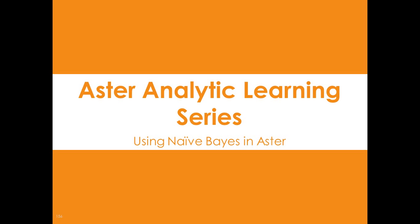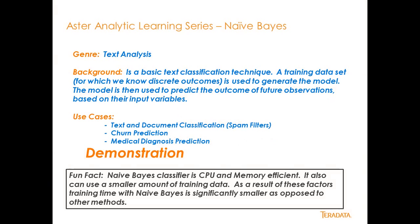Today we're going to talk about Aster Analytic Learning Series and using the Naive Bayes classifier. Naive Bayes is part of Aster's text analytics genre of analytics. It is a basic text classification technique or machine learning technique. It basically takes a training data set used to generate a model, which is then used to predict the outcome of future observations. Use cases include text and document classification, spam filtering, churn prediction, and medical diagnosis prediction.